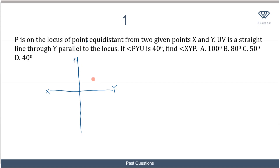We're also told that UV is a straight line through Y that is parallel to the locus. So we have a line UV that passes through Y and is parallel to the perpendicular bisector. Now, if angle PYU is 40 degrees...